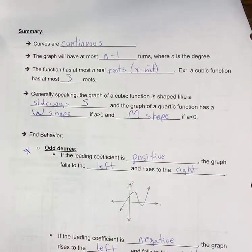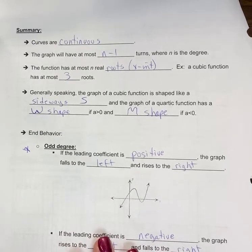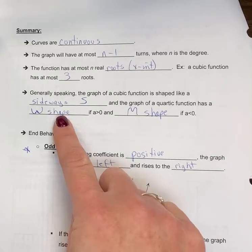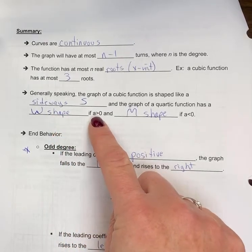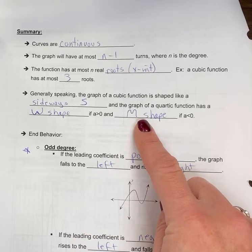Generally speaking, the graph of a cubic function is shaped like a sideways S. The graph of a quartic function has that W shape if a is positive, meaning the leading coefficient is positive. If it's negative, then it's reflected over the x-axis, so the shape is now more of an M type shape.